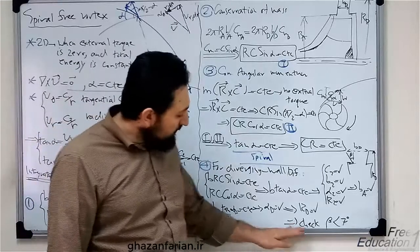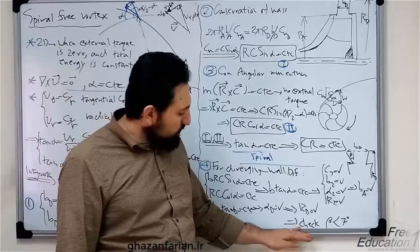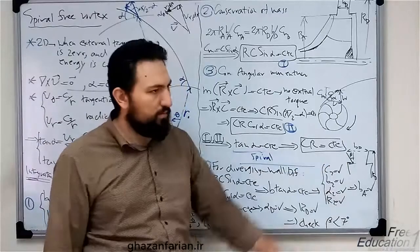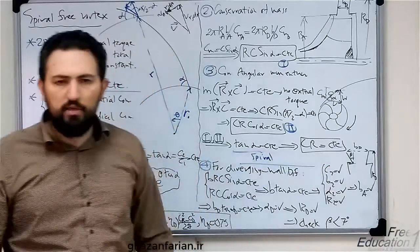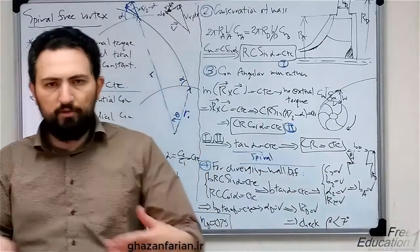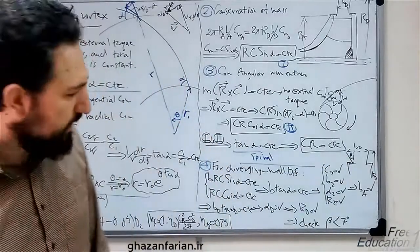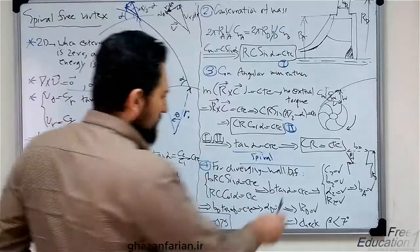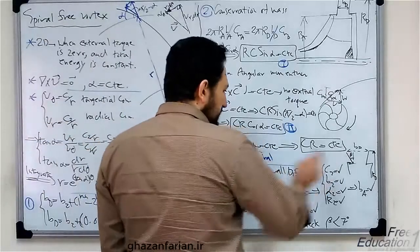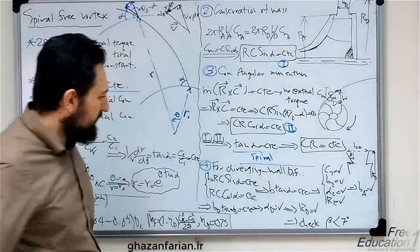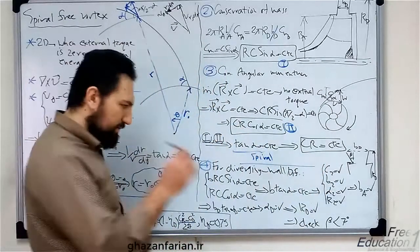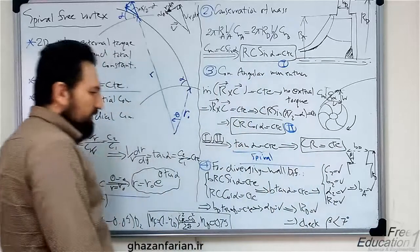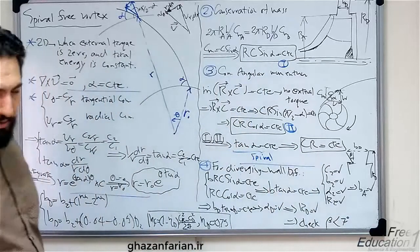Finally, you have to check the magnitude of beta. Beta can be obtained using geometrical relations in that triangle and other geometrical details. This angle should be less than 7 degrees.